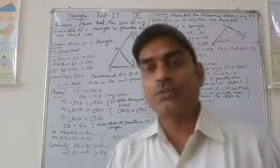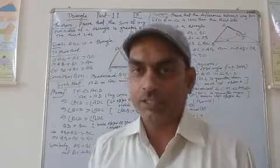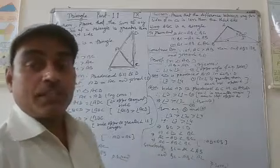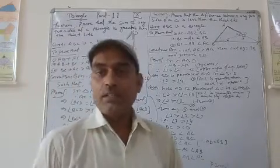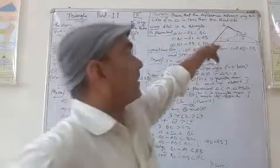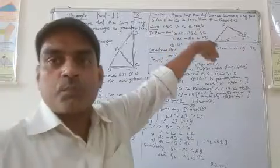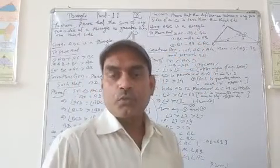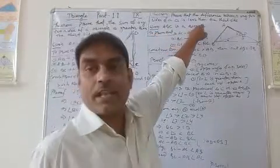This way we have proved that the sum of any two sides of a triangle is greater than the third side. The next theorem is: the difference of any two sides of a triangle is always less than the third side. Here we have a triangle ABC.